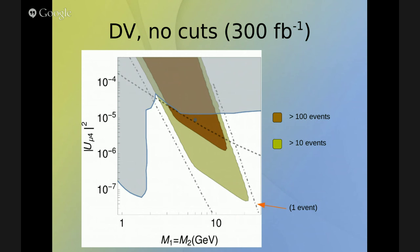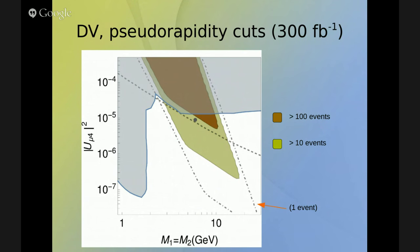Now we add constraints from the pseudorapidity constraints of the detectors. We cannot allow the muons to have a pseudorapidity larger than 2.4, and the jets cannot have a pseudorapidity larger than 2.5. Imposing those constraints, this region is of course reduced. Only a very small area of the parameter space now has more than 100 events, and most have more than 10.